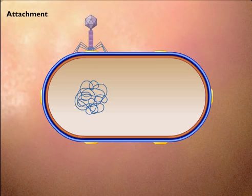Protein fibers at the end of the phage tail attach to specific receptors on the bacterial cell wall.